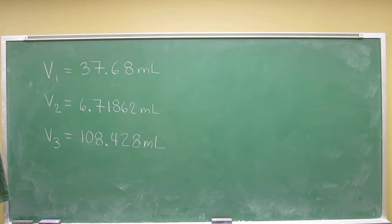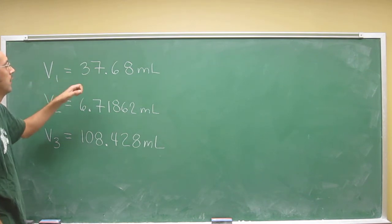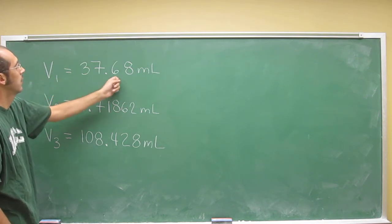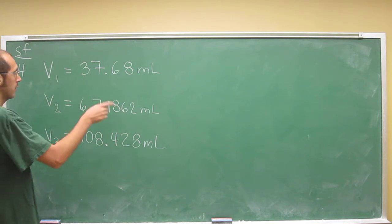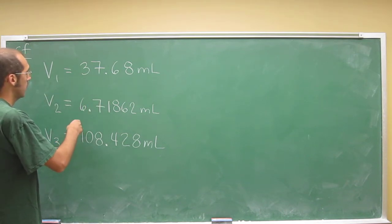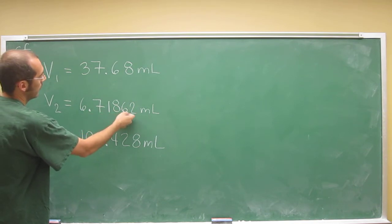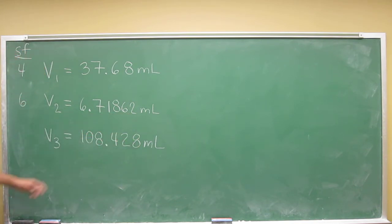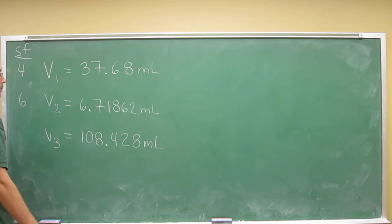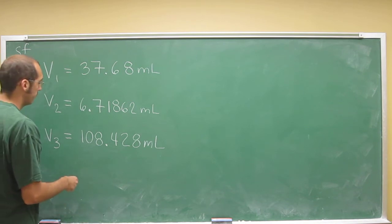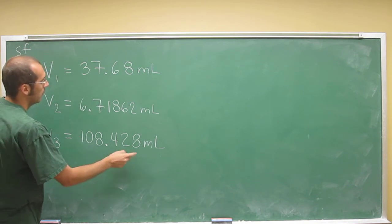We could probably by now figure out how many sig figs each one of these has. So let's just do that for fun. This first one, V1, if we counted them, it would be 4 sig figs. V2 here, these ones are pretty easy because there's no zeros. That's 1, 2, 3, 4, 5, 6 sig figs. And the last one, 108, it's got that one captive zero, but remember captive zeros are always significant. So that's 1, 2, 3, 4, 5, 6 sig figs.